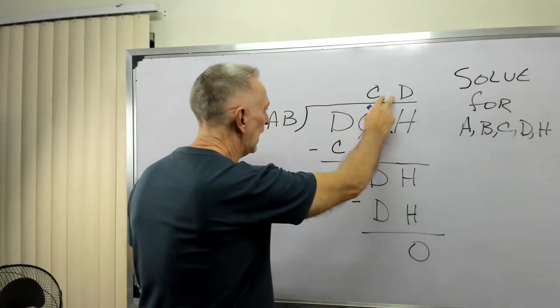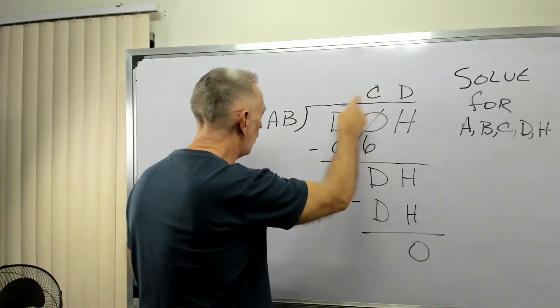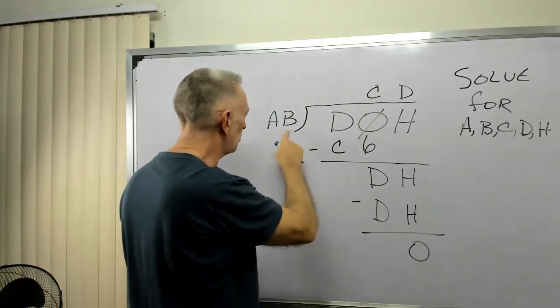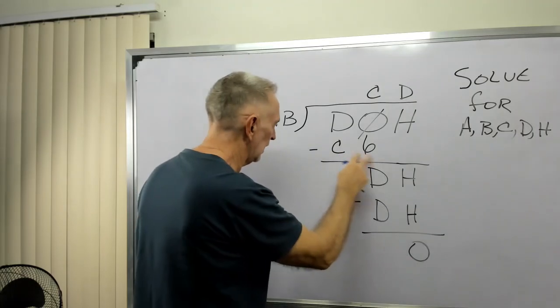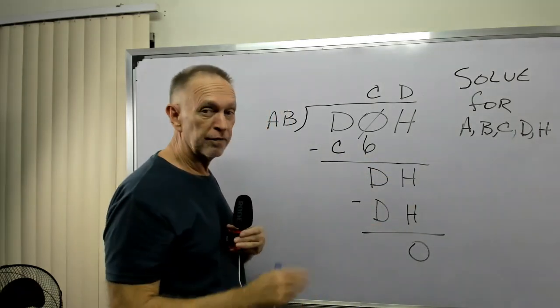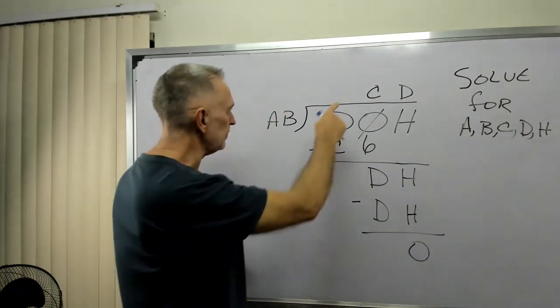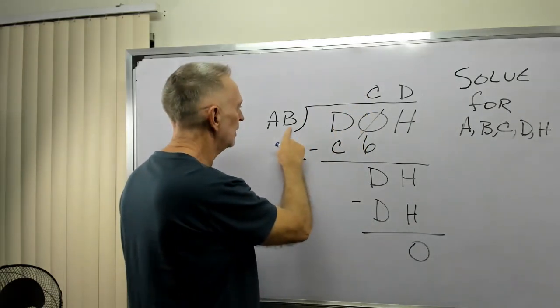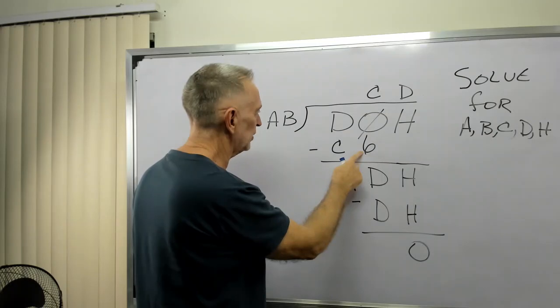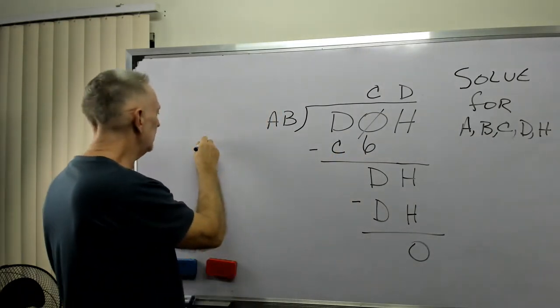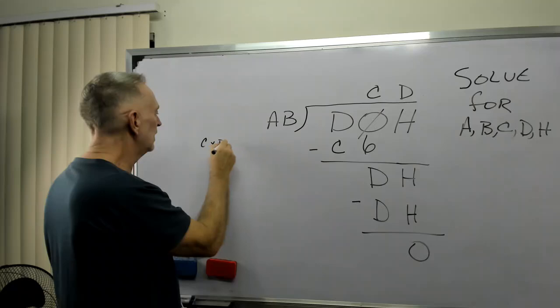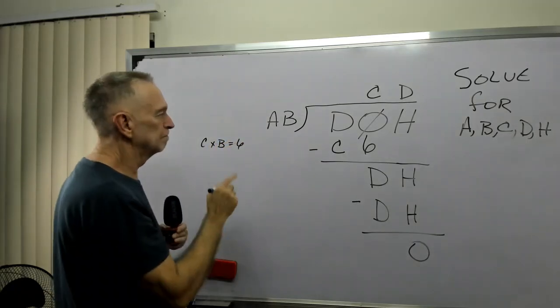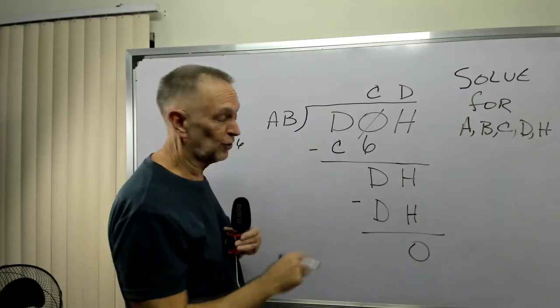Since we have the answers here, let's walk through the process of multiplying this and see if we can solve for each variable. C times B would give me this 6. So C times B equals 6. That's our first clue.